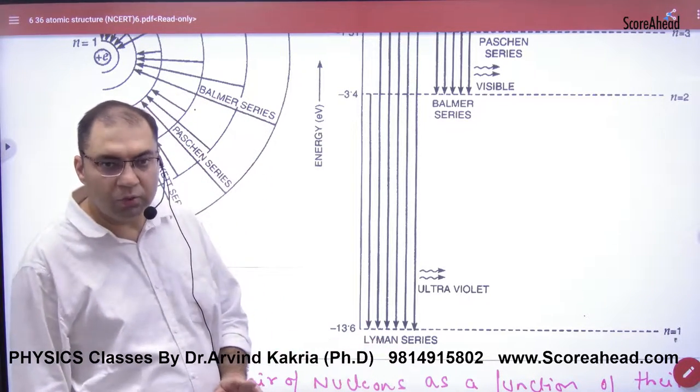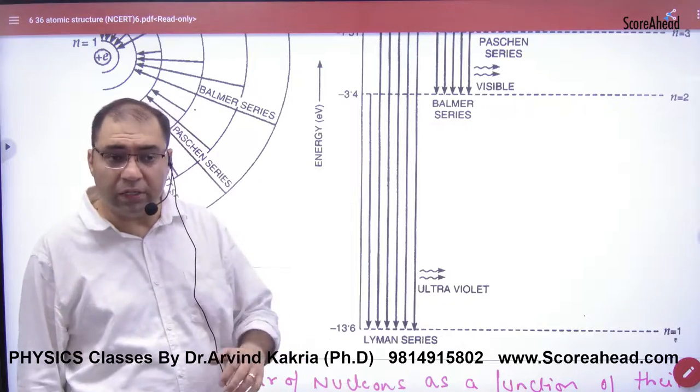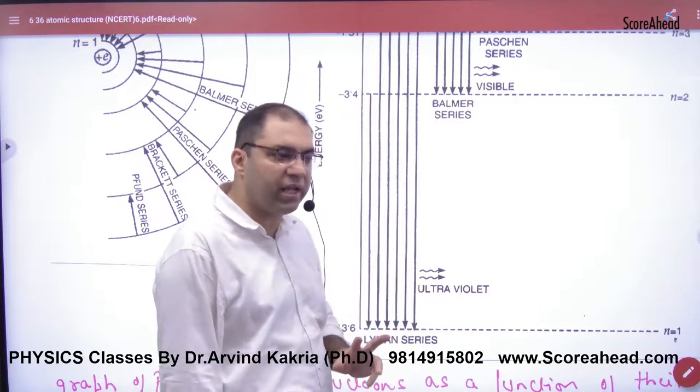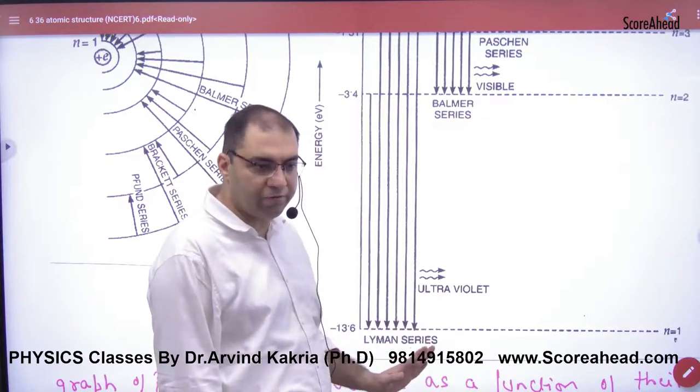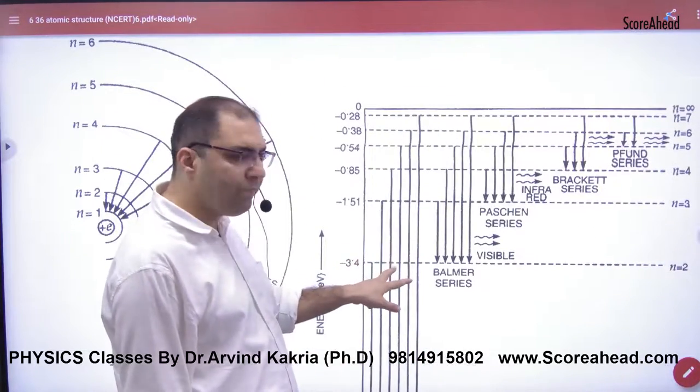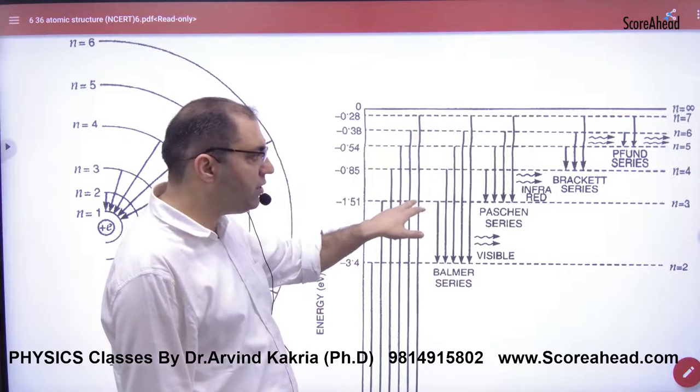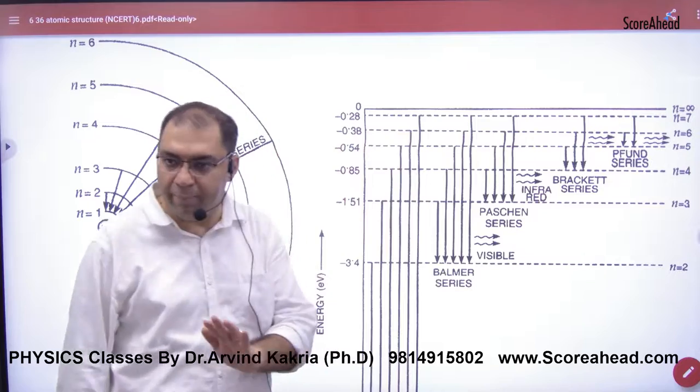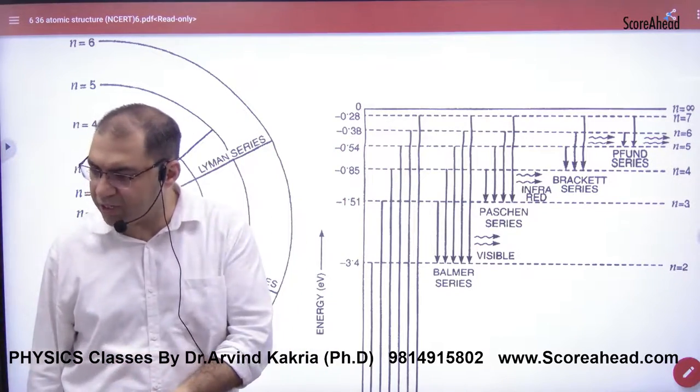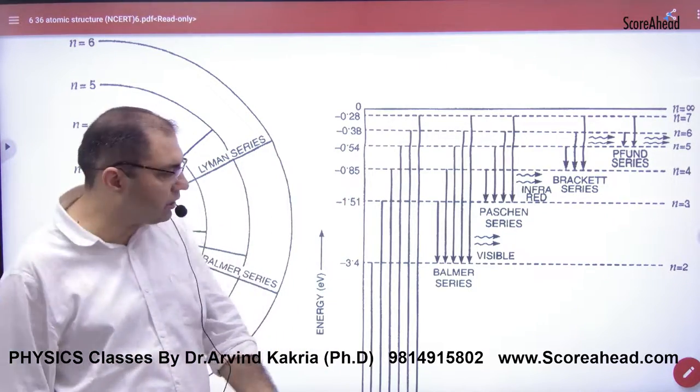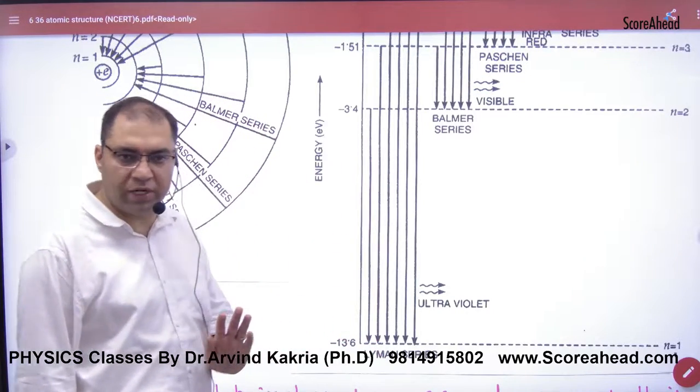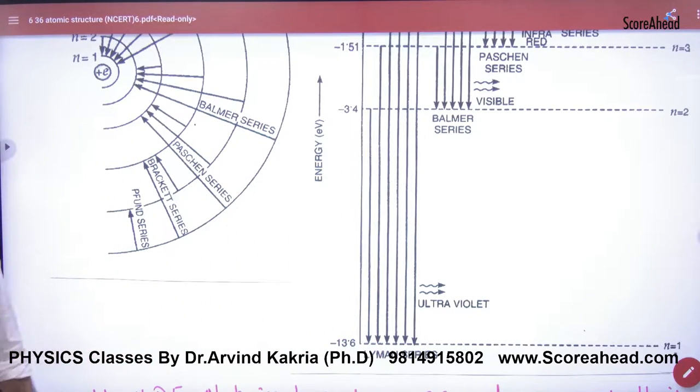Lyman series. So in this paper, Lyman series will say and will ask which radiation in Lyman series. Then n is equal to 2 Balmer series, 3 Paschen series, Brackett series and this way. So this series, remember n is equal to 1 is Lyman series and Balmer series.